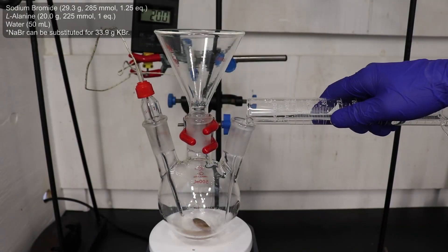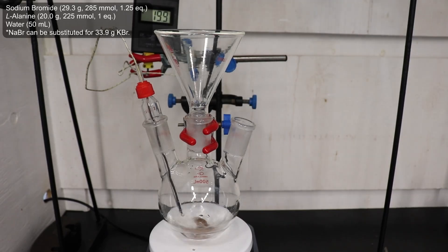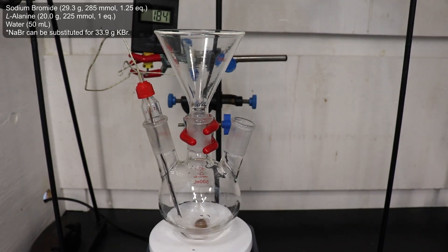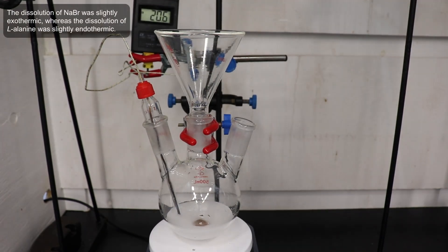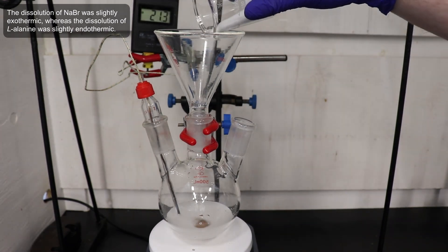To begin, I set up a 3-necked 500 mL round-bottom flask with a stir bar and thermocouple probe. To this, I add in 50 mL of water, 29.3 g of sodium bromide, and 20 g of L-alanine.